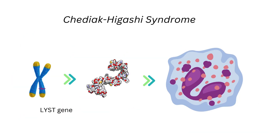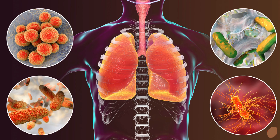Chédiak-Higashi syndrome is a rare autosomal recessive disease of immune dysregulation with a genetic mutation that encodes for a protein that regulates the morphology and function of lysosomal organelles, forming fused granules and abnormally large lysosomes. Because of the leukocyte lysosomal dysfunction, children suffer from frequent life-threatening pyogenic infections and bleeding due to malfunctioning platelets, usually resulting in death by 10 years of age.